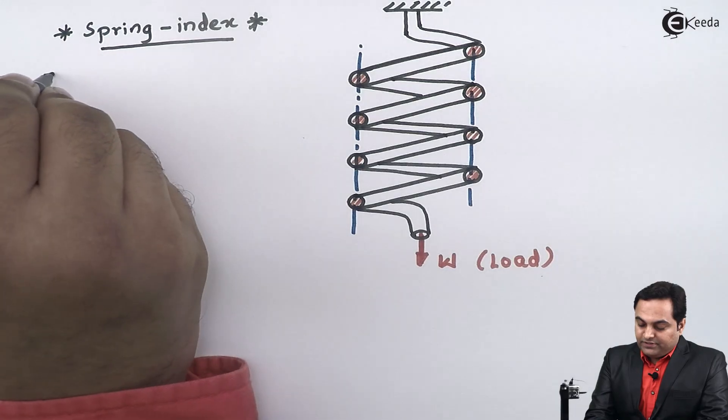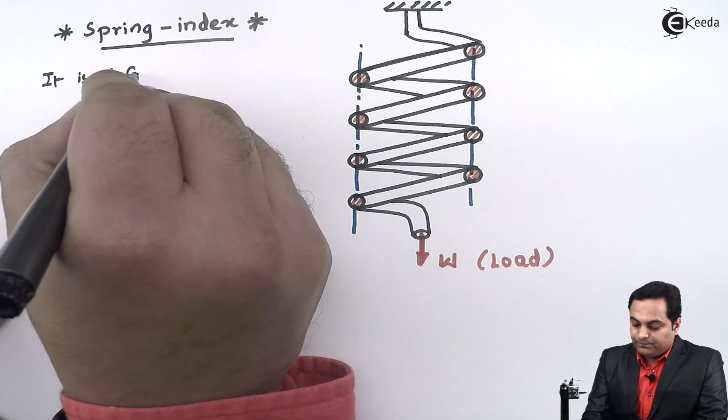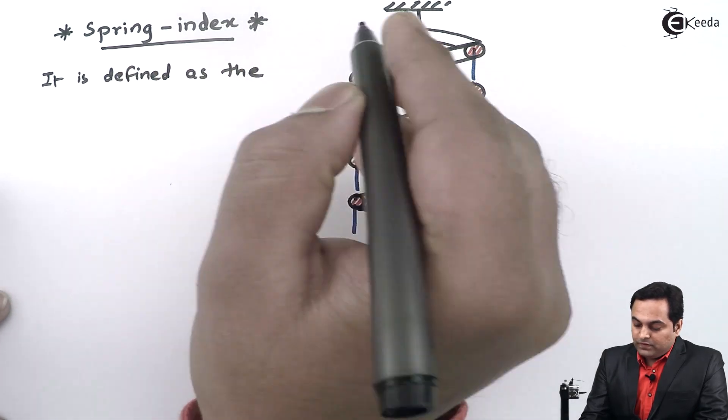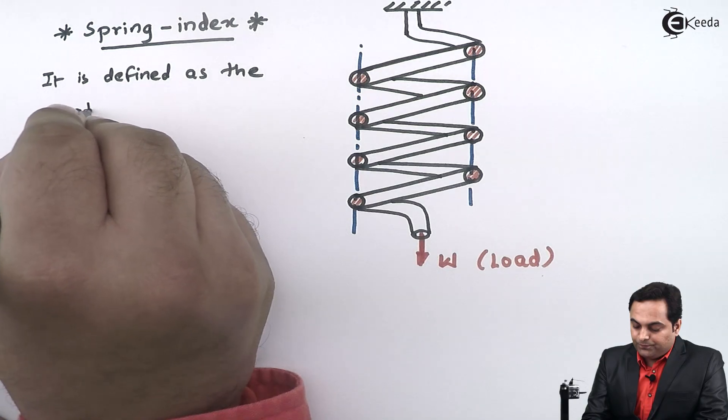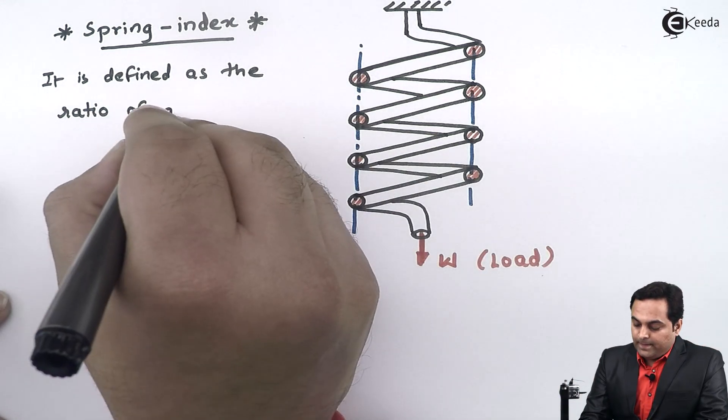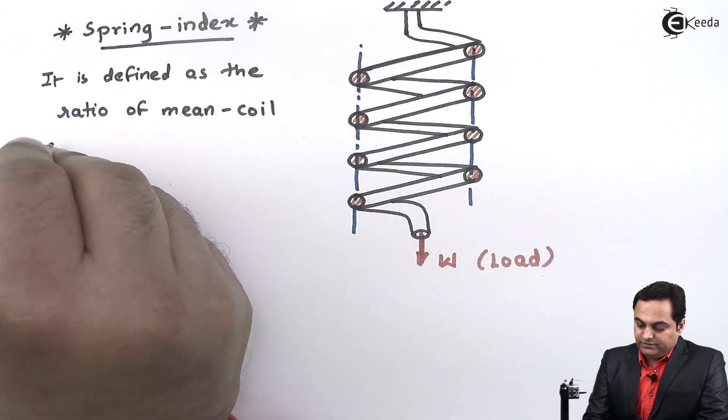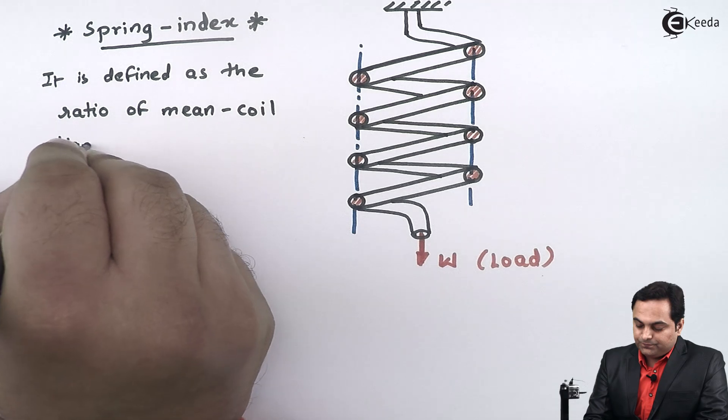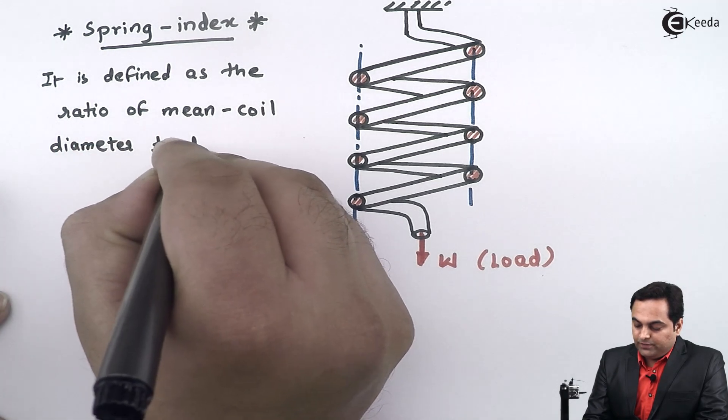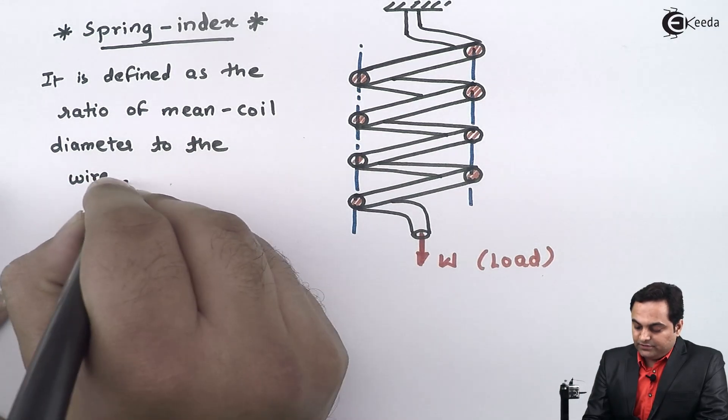Spring index is defined as the ratio of mean coil diameter to the wire diameter.